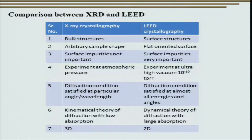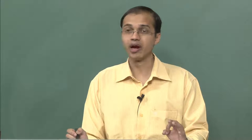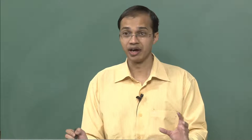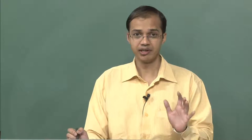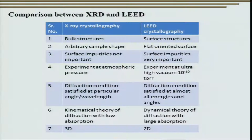In normal x-ray crystallography, kinematic theory of diffraction generally works out and we can generally neglect absorption, with the exception of grazing incidence small angle x-ray scattering. However, when we come to low energy electron diffraction, we have to deal with dynamical theory of diffraction, which also accounts for a large amount of absorption. The basic difference is that x-ray crystallography gives us 3D information while LEED crystallography gives us two-dimensional information of the lattice.